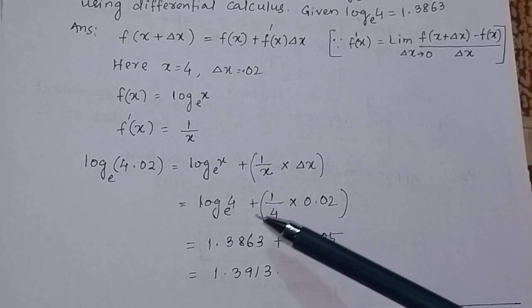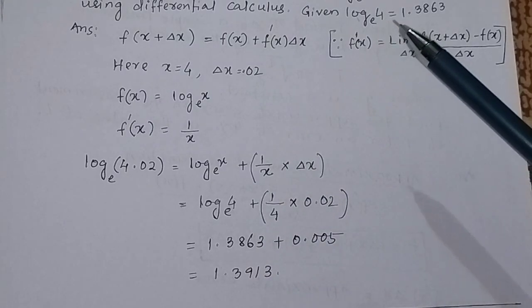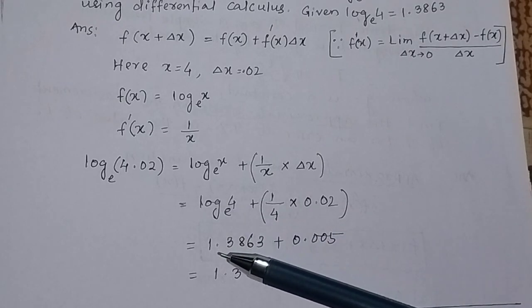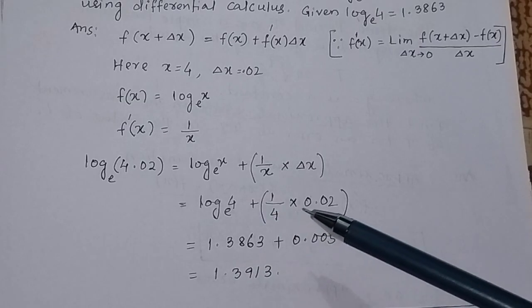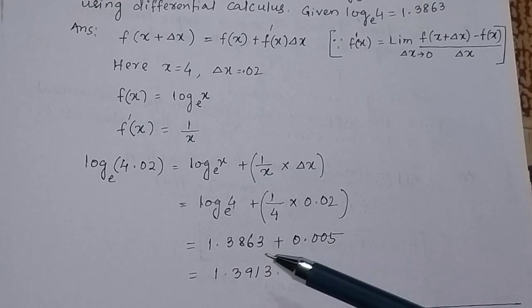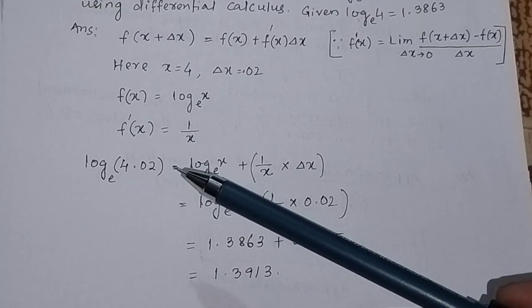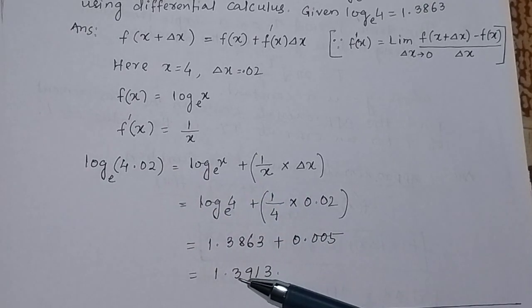It is given that log 4 to the base E is equal to 1.3863. So the expression becomes 1.3863 + (1/4)×0.02, which equals 1.3863 + 0.005. Adding these two numbers gives 1.3913. Therefore, the approximate value of log 4.02 to the base E is equal to 1.3913.